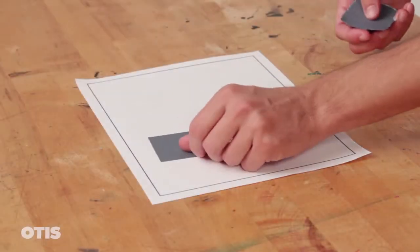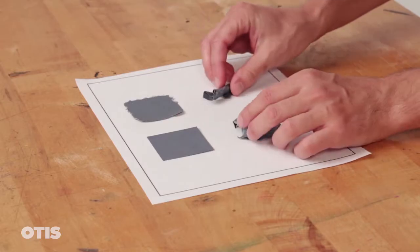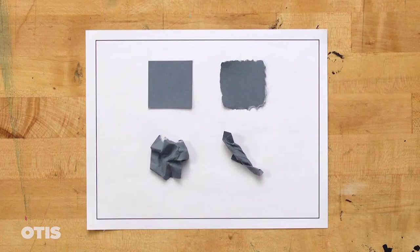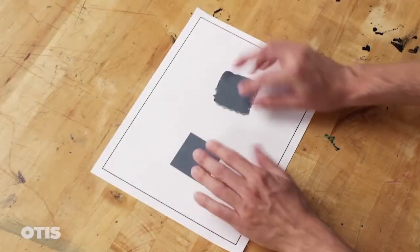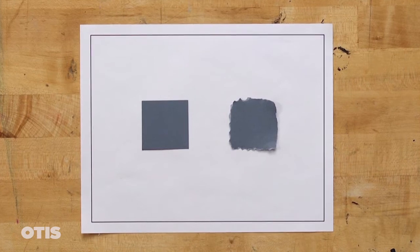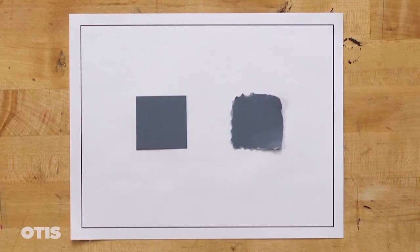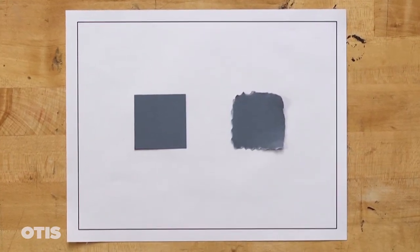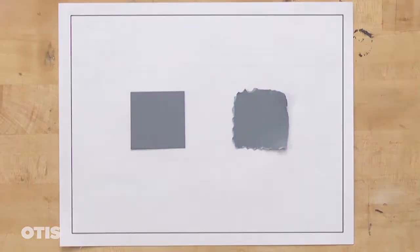Different textures and edges can also draw attention. Here I have cut, crumpled, torn, and twisted paper. Be aware that irregular edges may draw attention differently than smooth edges. Experiment to see which is more effective for your composition.